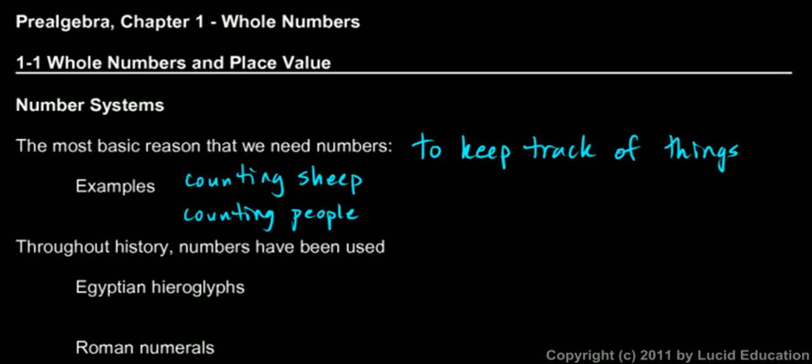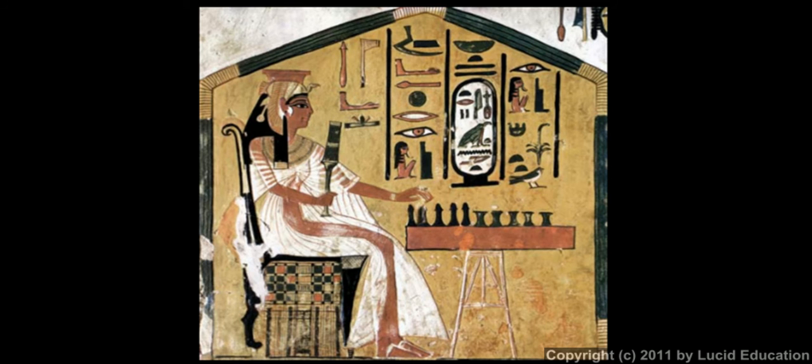Throughout history, different types of number systems have been used. Here are two examples from a long time ago: Egyptian hieroglyphs. Here's a picture of some Egyptian hieroglyphs.